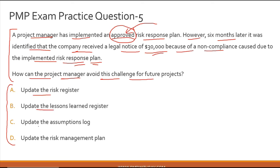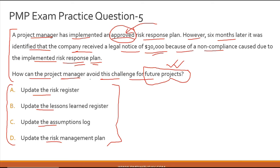Options: A — update the risk register; B — update the lessons learned register; C — update the assumptions log; D — update the risk management plan. To answer this correctly you need to read the question word by word. The answer lies in the phrase 'future projects.' If you are doing something to correct a mistake not for this project but for future projects, you are essentially doing a lessons learned — learning from one mistake and applying it to future projects.